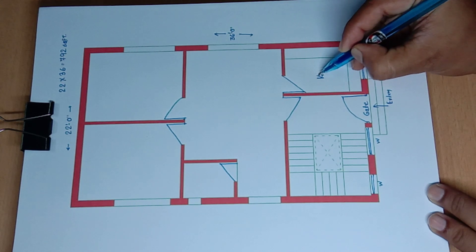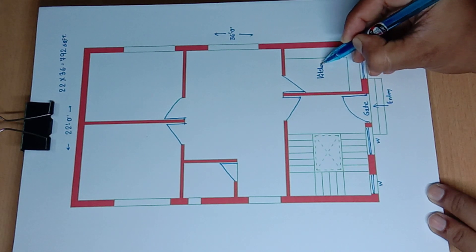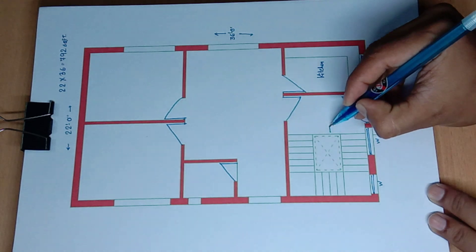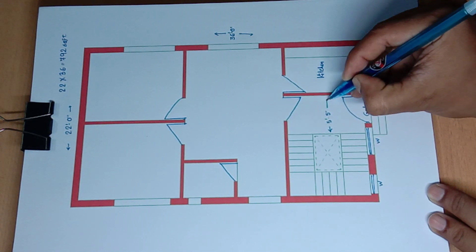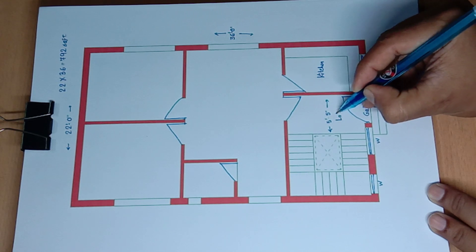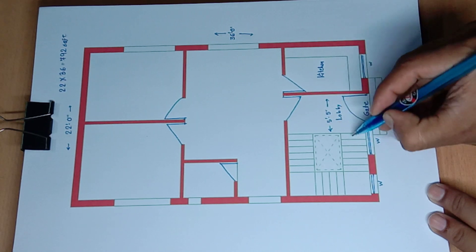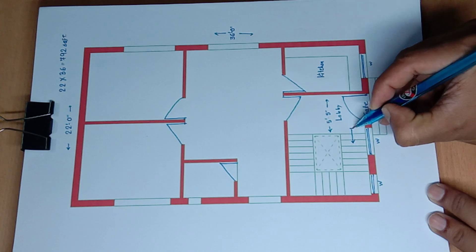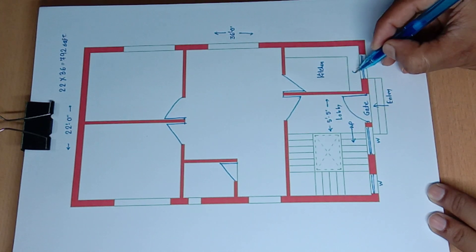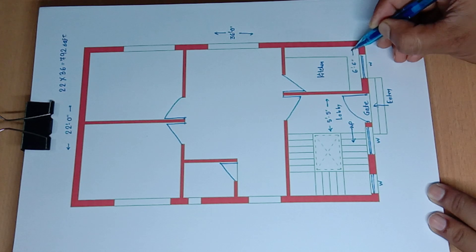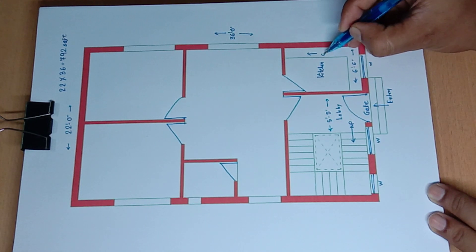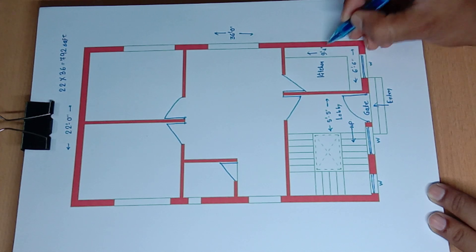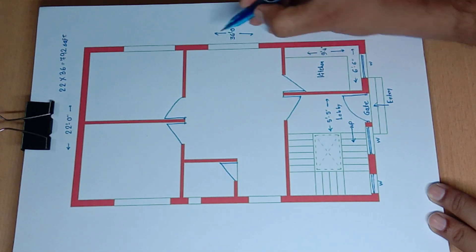Kitchen. 5 feet 5 inch wide lobby and passage stair up. 6 feet 6 inch and 9 feet 4 inch.